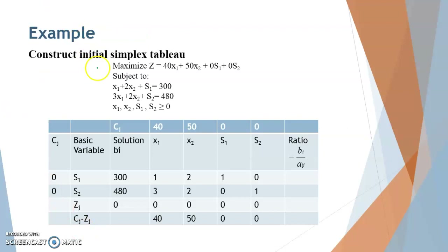Now let's understand this with the help of an example. This is the initial Simplex tableau where the objective is maximization. The equations have been set up and entered into the table. Now check whether the optimality condition is satisfied. Since the objective is maximization, the condition requires all Cj minus Zj values to be less than or equal to 0, but some values are positive, so optimality has not been achieved.